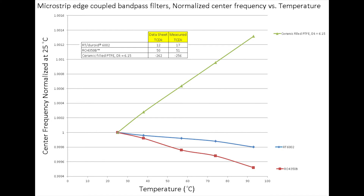On the chart you can see what kind of change a person could expect for the filter center frequency as it sweeps across a range of temperatures. In the case of the well-behaved materials — the RT/Duroid 6002 and the RO4350B — there is a very minimal amount of shift in center frequency. As compared to the PTFE material that has a higher TCDK, you can see there is a much greater response and the center frequency of the filter is changing pretty significantly.